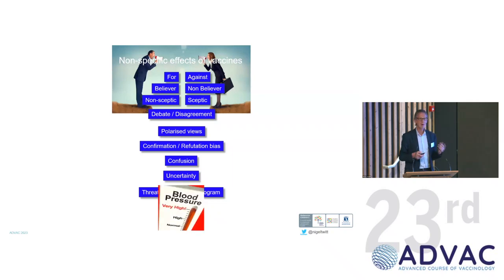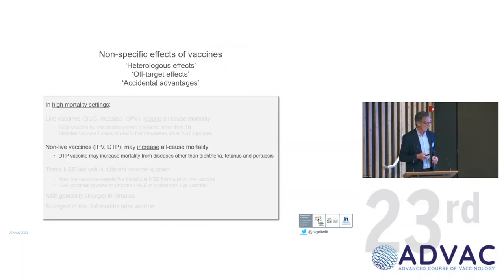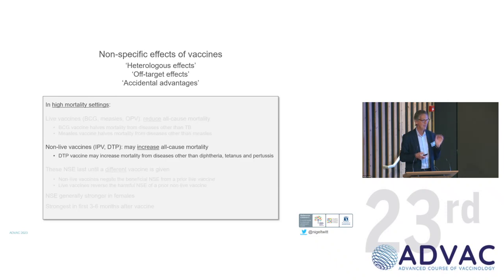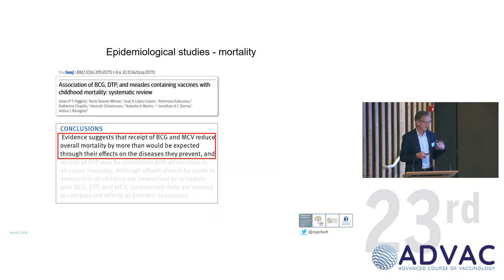So lots of different effects. And the question of course is how does BCG do this? We know it's a very strong immunomodulator. And the current, at least one very strong contributing mechanism, is trained immunity. Now, the other side of this theory is that non-live vaccines, such as inactivated polio vaccine and DTP, may — and that's an important word — may increase all-cause mortality.